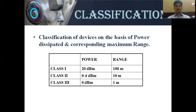Classification of devices is based on power dissipated and corresponding maximum range. There are basically 3 classes. Class 1 has a power of 20 dBm and a range of 100 meters. Class 2 has a power of 0 to 4 dBm and a range of 10 meters. Class 3 has a power of 0 dBm and a range of 1 meter.